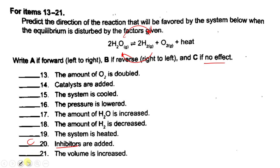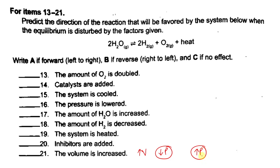Number 21: the volume is increased. The stress is increasing the volume. According to Boyle's law, when we increase the volume we are decreasing the pressure. To balance the decrease in pressure, the system would like to make more pressure, based on the number of moles. On the left side we have 2 moles; on the right side we have 3 moles. The system will shift left to right to make more pressure, favoring the forward reaction.